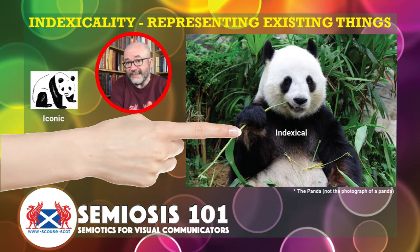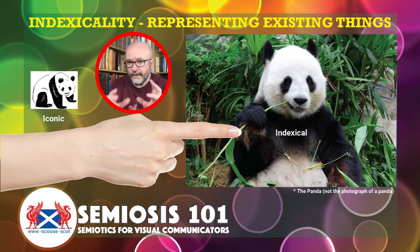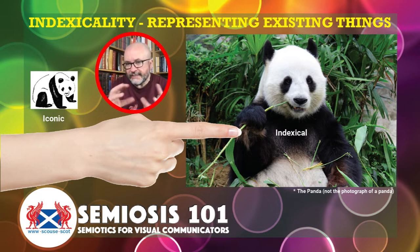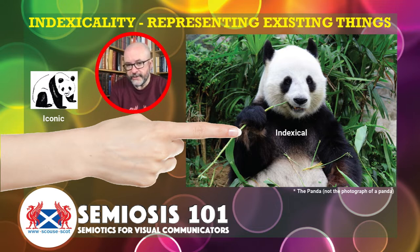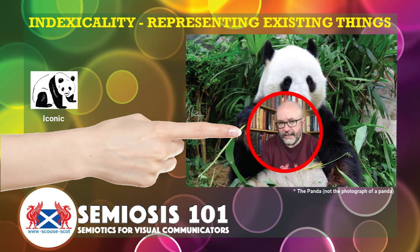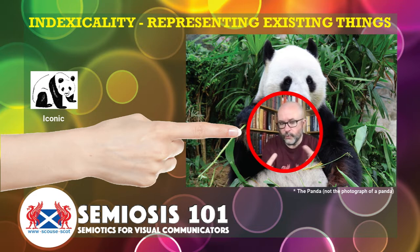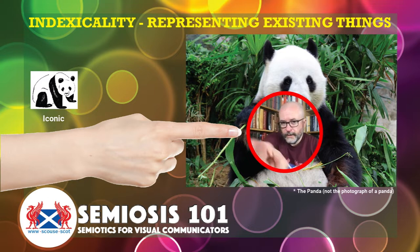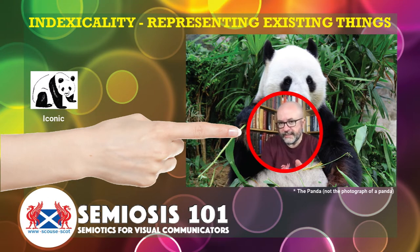We've now moved up from iconicity and we're going to be looking at indexicality. Within semiosis, Peirce's semiotic theory, indexicality is the second level of representation of the concept that we need to visually communicate. Think of the index finger as a way of getting your head around indexicality, because the finger points — and we're going to keep coming back to this throughout today's talk.